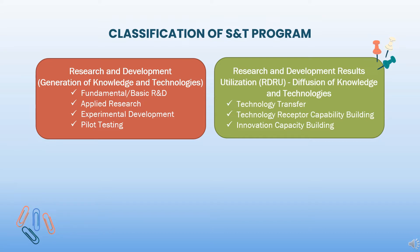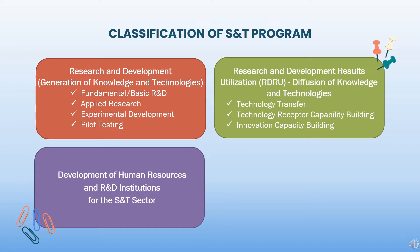Development of Human Resources and R&D Institutions for the S&T Sector involves a wide range of interventions from the provision of high-quality education to specialized training and the development, attraction, and retention of the country's S&T talents. Development of R&D institutions involves the creation of consortia which address specific S&T concerns of a region or a group.